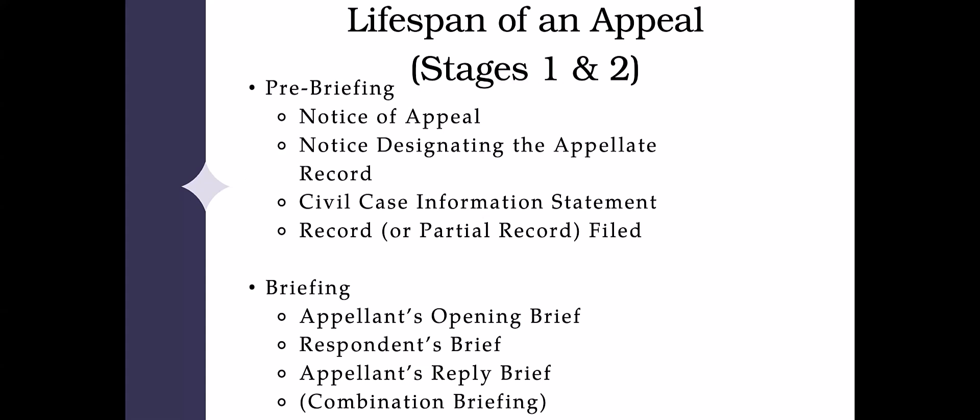Moving on to briefing — briefing is pretty straightforward in a typical appeal. The appellant has the burden of persuasion, so they get the first and the last word. There's the opening brief, then the respondent's brief, and then the reply brief responding to the respondent's brief. This is the case for 99% of appeals. The only real exception is a cross-appeal, where there are four briefs: an opening brief, a combined respondent's and cross-appellant's brief, the appellant's reply and cross-respondent's brief, and finally the cross-appellant's reply brief.